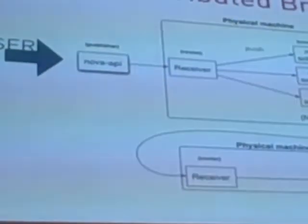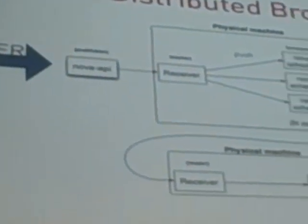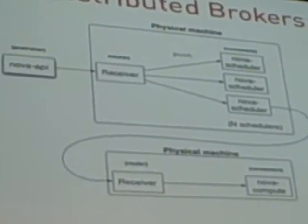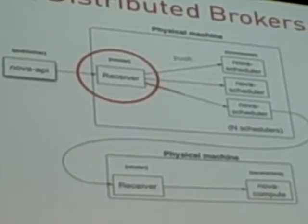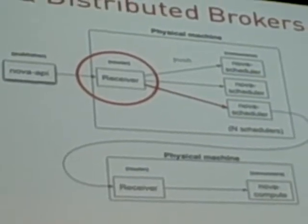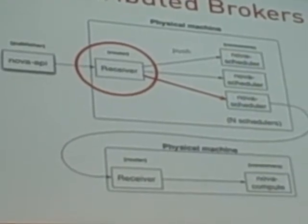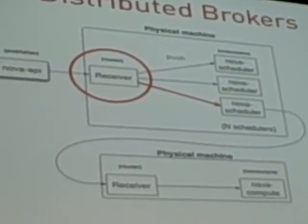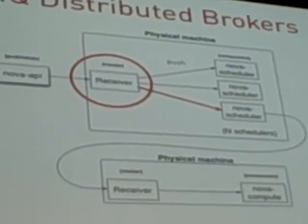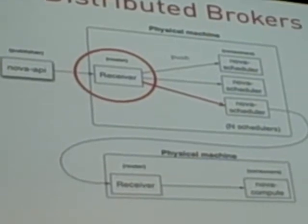We don't need to get too deep into the architecture, but I put this up here because it shows there's this receiver process in the middle. That receiver in the middle is kind of your distributed broker — that's where your messages come into. We made some optimizations to that piece, and you may see it referred to as a proxy, just so the following slides make sense.